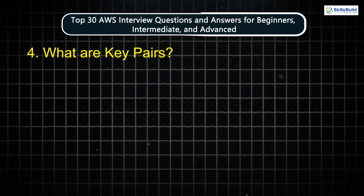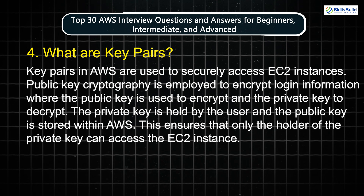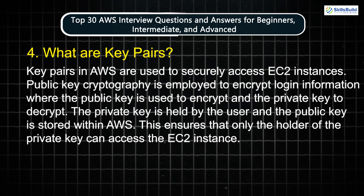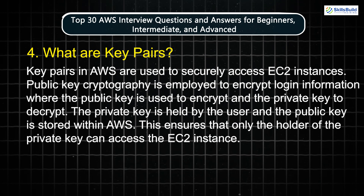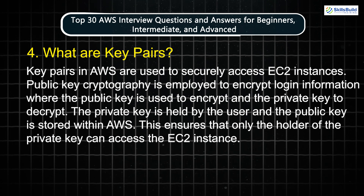Question 4: What are key pairs? Key pairs in AWS are used to securely access EC2 instances. Public key cryptography is employed to encrypt login information, where the public key is used to encrypt and the private key to decrypt. The private key is held by the user and the public key is stored within AWS, ensuring that only the holder of the private key can access the EC2 instance.